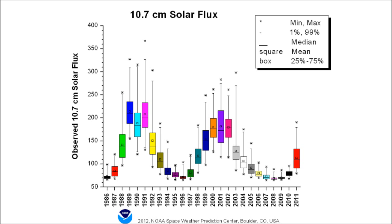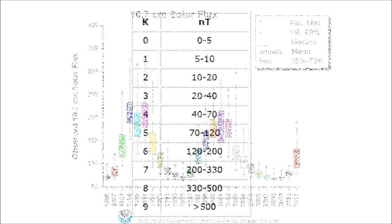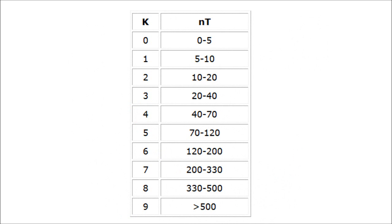The K index is a code that relates to the maximum fluctuation of horizontal components observed on a magnetometer relative to a quiet day during a three-hour interval. The conversion table for maximum fluctuation K index varies from observatory to observatory in such a way that the historical rate of occurrence of certain levels of K are about the same at all observatories. In practice, this means that observatories at higher geomagnetic latitudes require higher levels of fluctuation for a given K index.